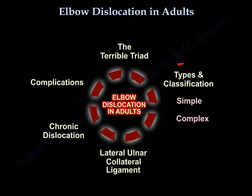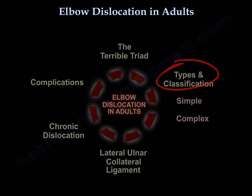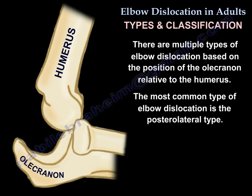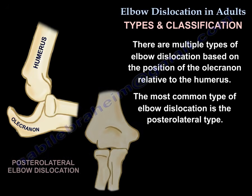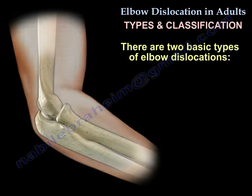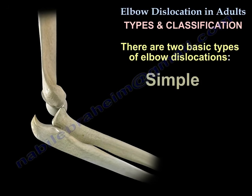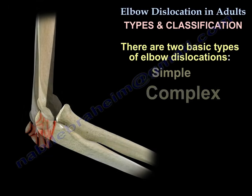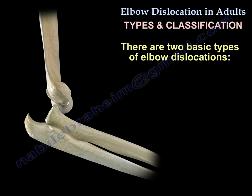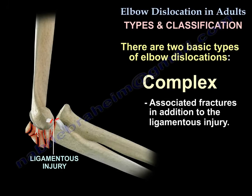There are multiple types and classifications of elbow dislocation based on the position of the olecranon relative to the humerus. The most common type is the posterolateral type. There are two basic types: simple and complex. Simple means no fracture — it is usually a ligamentous injury. Complex means there are associated fractures in addition to the ligamentous injury.